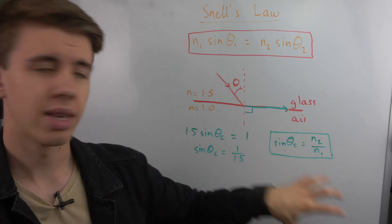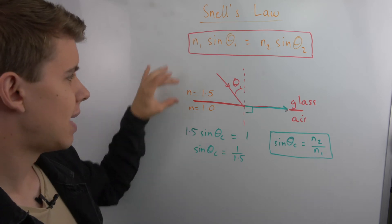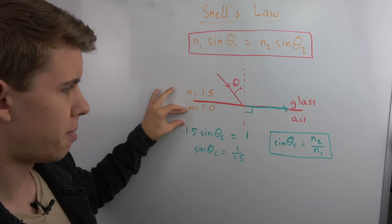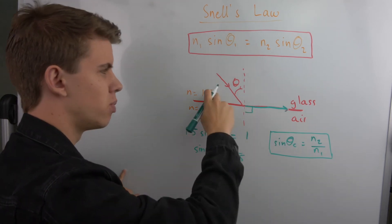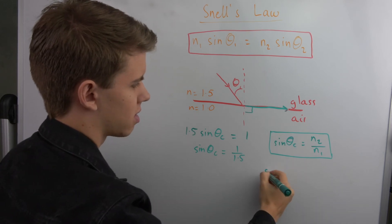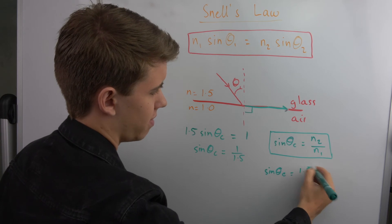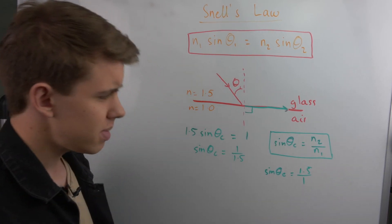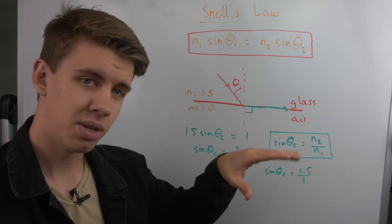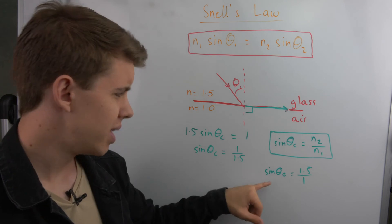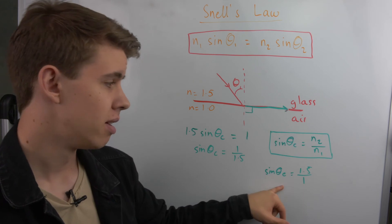So we can use this to explain why this wouldn't work if this was the opposite way around. So if we had air on top and glass on the bottom, that would mean that our n₁ would be 1 and our n₂ would be 1.5. So in that case, sine of theta C would be equal to 1.5 divided by 1. Now the function sine has a maximum limit of being 1 and a minimum limit of being minus 1.